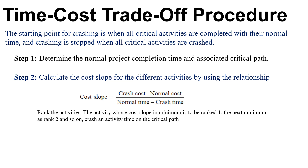After calculation of the cost slope, we have to rank the activities. The activity with the minimum cost slope is ranked 1, the next minimum as rank 2, and so on. Then crash the activity time on the critical path.